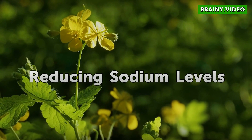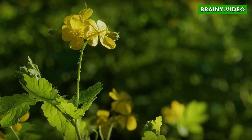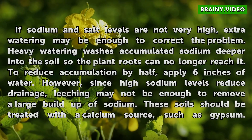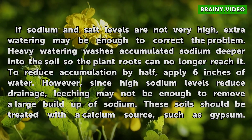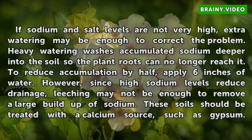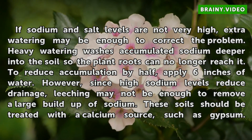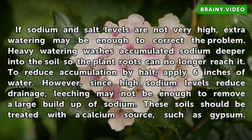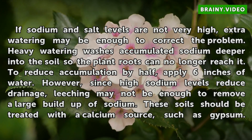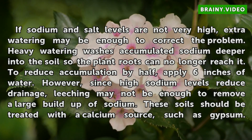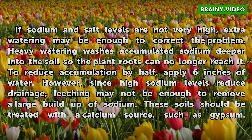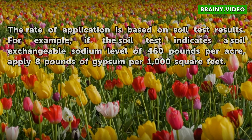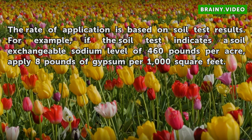Reducing Sodium Levels. If sodium and salt levels are not very high, extra watering may be enough to correct the problem. Heavy watering washes accumulated sodium deeper into the soil so plant roots can no longer reach it. To reduce accumulation by half, apply 6 inches of water. However, since high sodium levels reduce drainage, leaching may not be enough to remove a large buildup of sodium. These soils should be treated with a calcium source, such as gypsum, and the rate of application is based on soil test results.